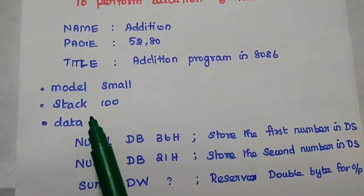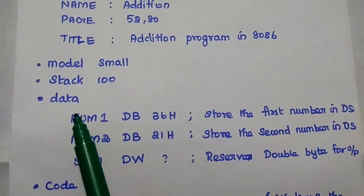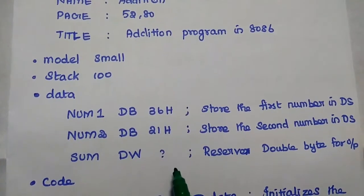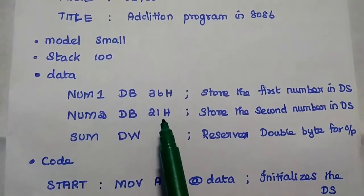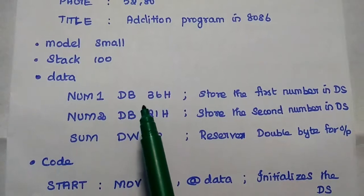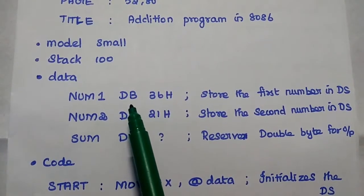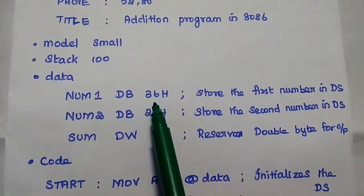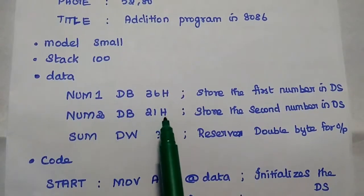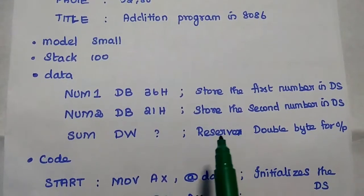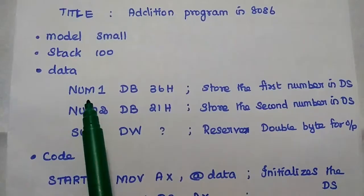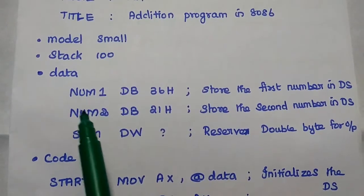The model directive represents whether it is a small or big kind of program. We have to initialize the stack segment. The data segment is where we are going to store the actual data to be used in this program. We are going to add two numbers, so we can get the first number as byte. The first value is 36H and the second number is 21H — both are stored in the data segment. The data segment allocates some memory locations to the data.